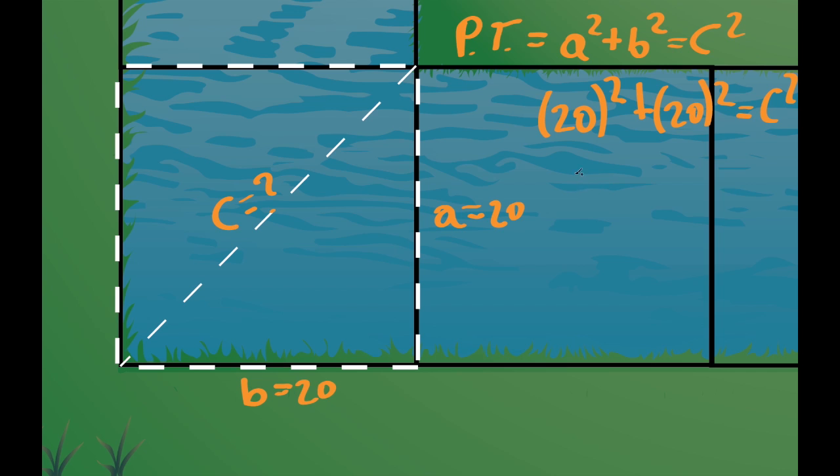And then when I solve for this, 400 plus 400 equals c squared, and the square root of 800 equals c. So c equals 28.28.